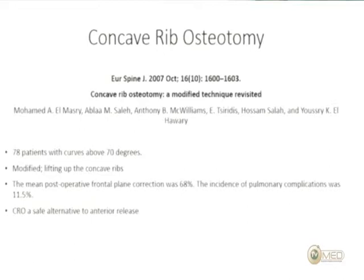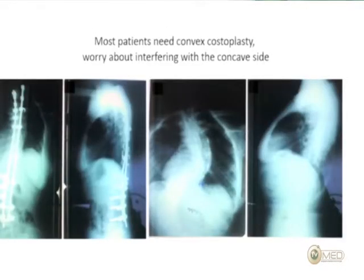Concave rib osteotomy is a technique that has been largely forgotten. We revived it and published results in 2007, using it for curves above 70 degrees as a replacement for anterior release with some good results. However, I've stopped doing it because I'm concerned about interfering with both sides of the chest — already doing costectomies on one side and concave rib osteotomies on the other.